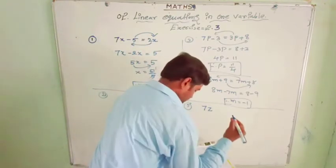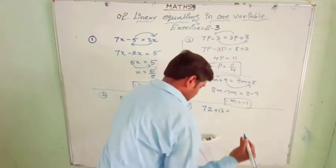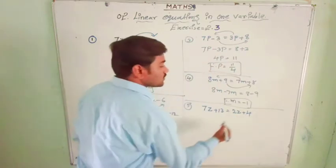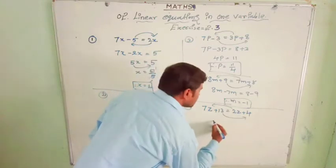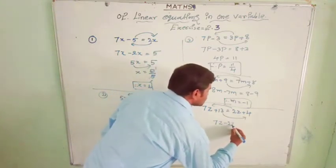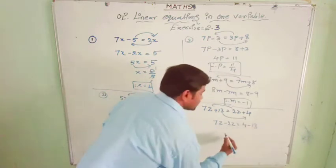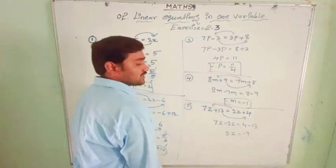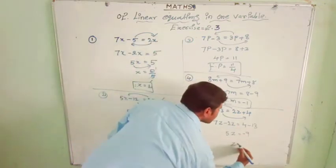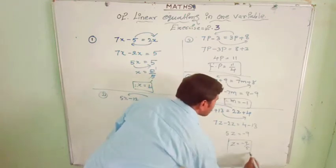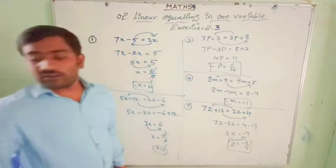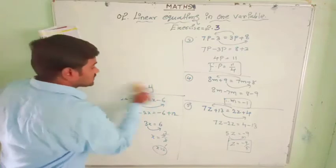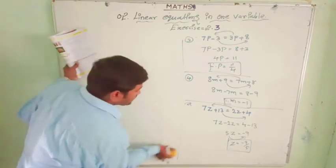The fifth problem: 7z plus 13 equal to 2z plus 4. This 2z will come to this side and 13 will transfer to the other side. So 7z minus 2z equal to 4 minus 13. That gives 5z equal to minus 9. Therefore z equal to minus 9 by 5. If 5 is multiplied to z and you transpose, it will divide.